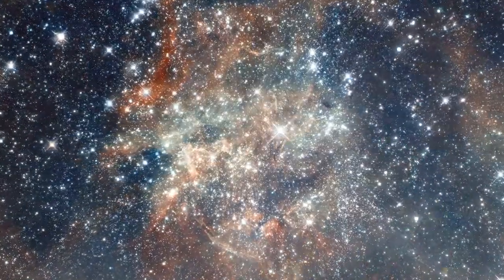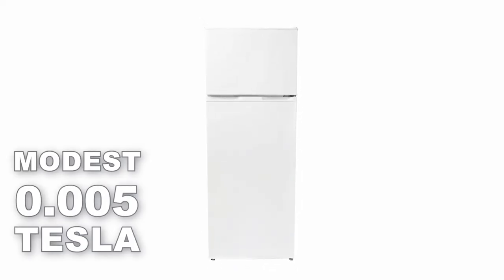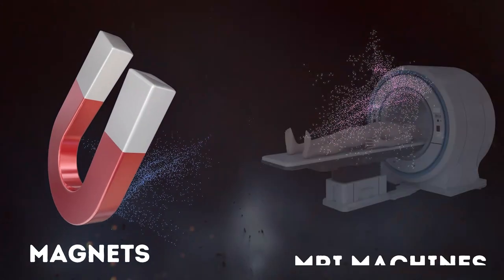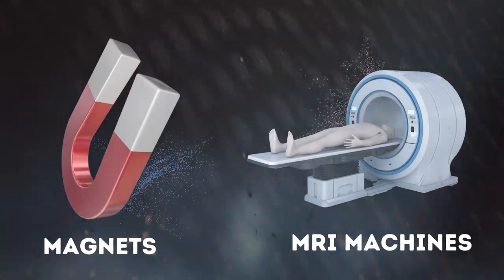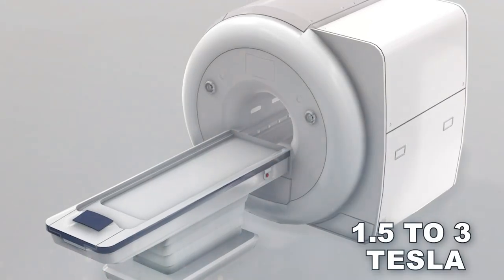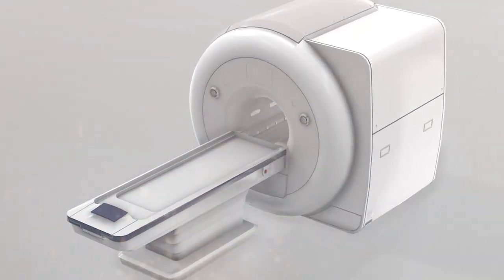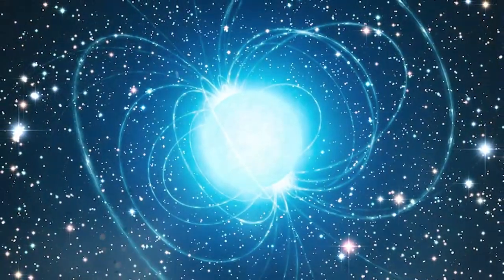To give you a perspective of scale, your typical fridge magnet features a modest 0.005 Tesla, while the heavy-duty magnets in MRI machines reach between 1.5 to 3 Tesla. Impressive, right? Well, hold on, because magnetars take it to a whole new level.